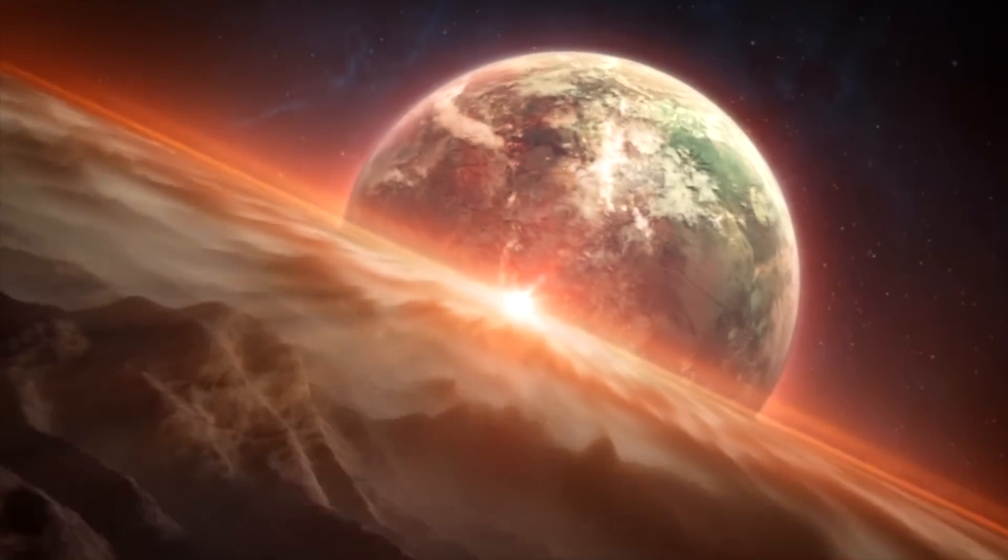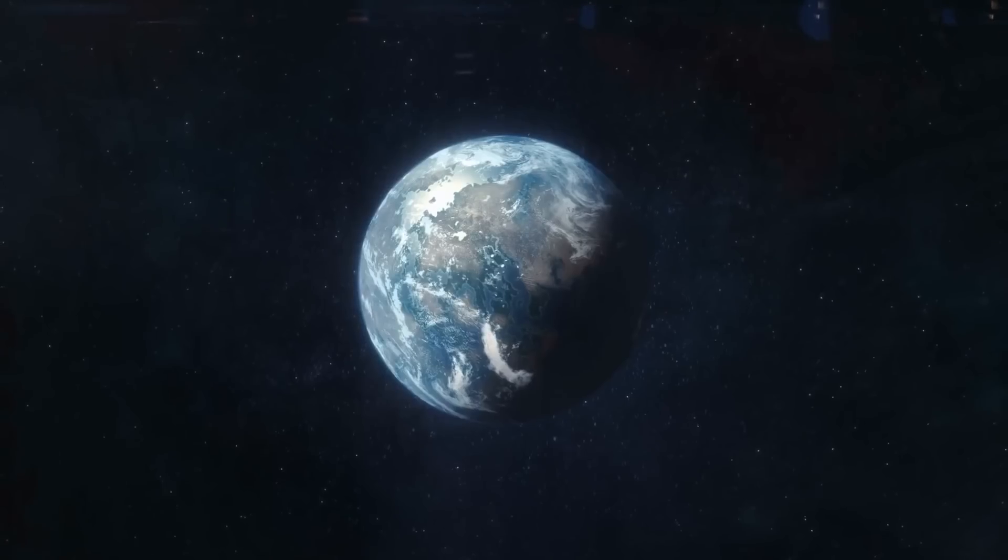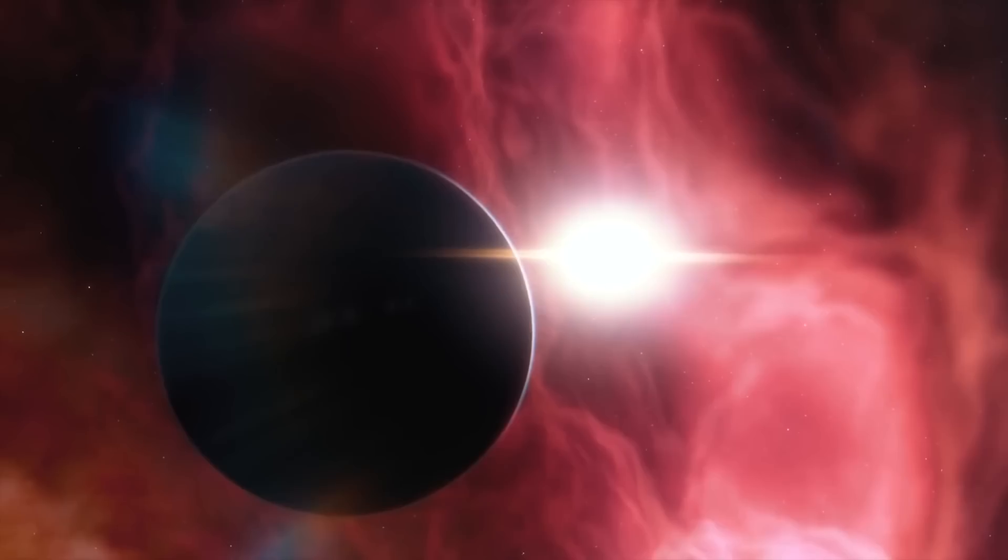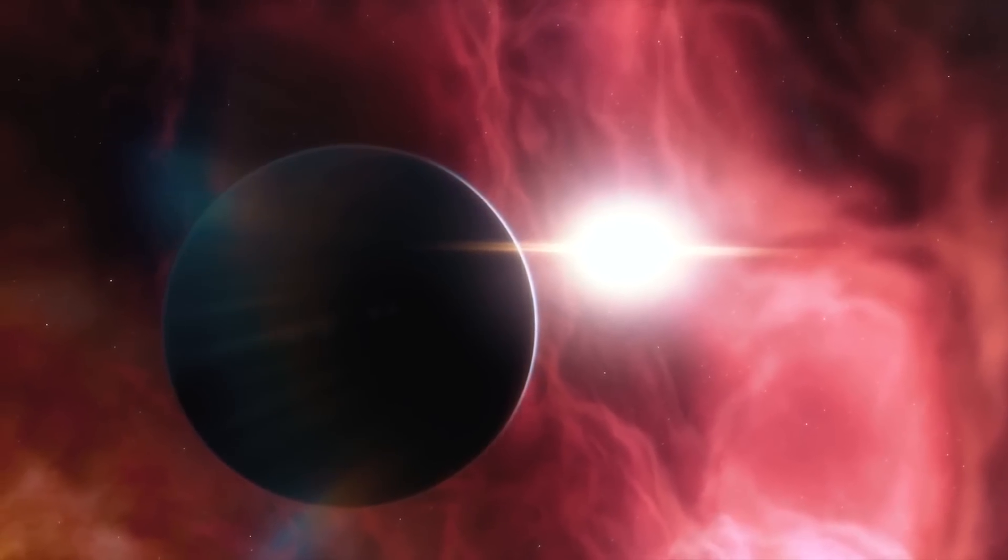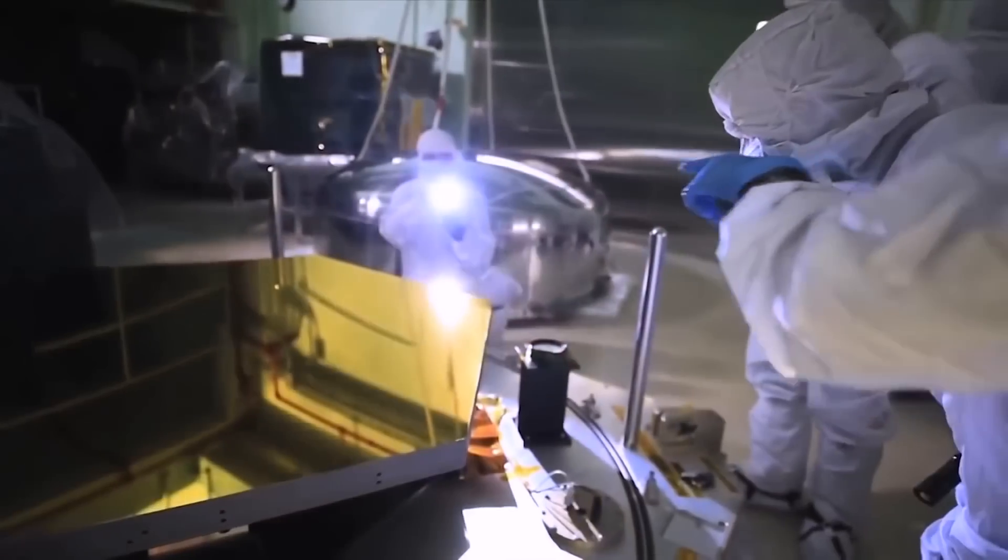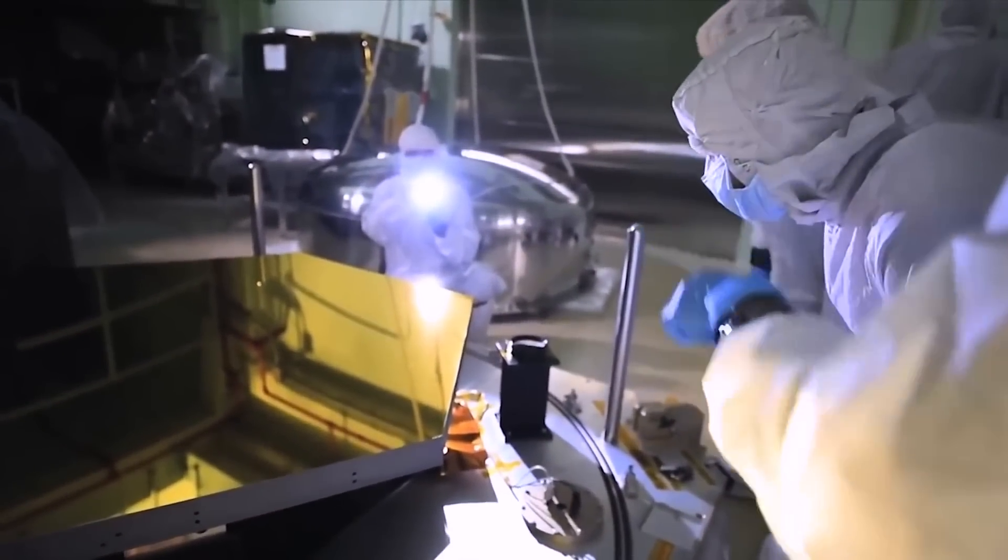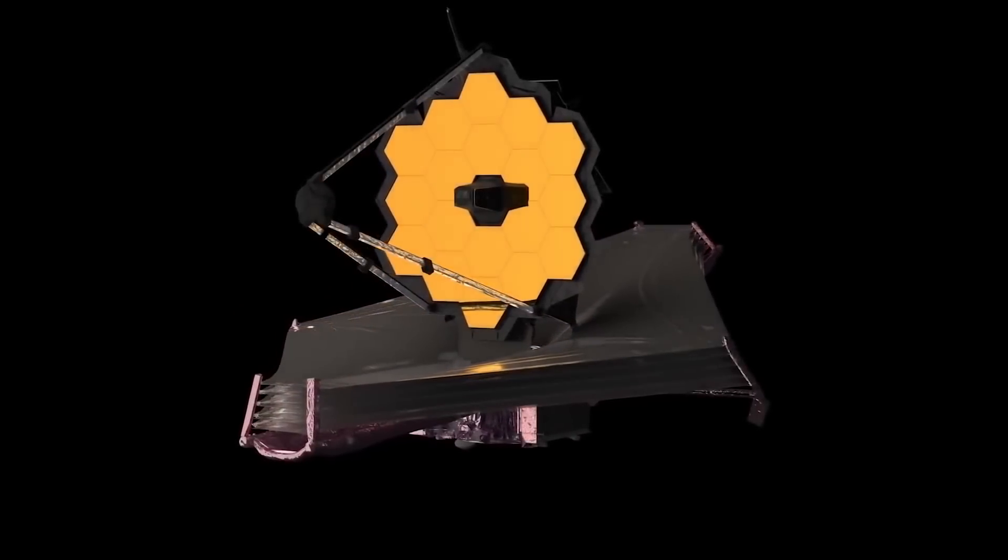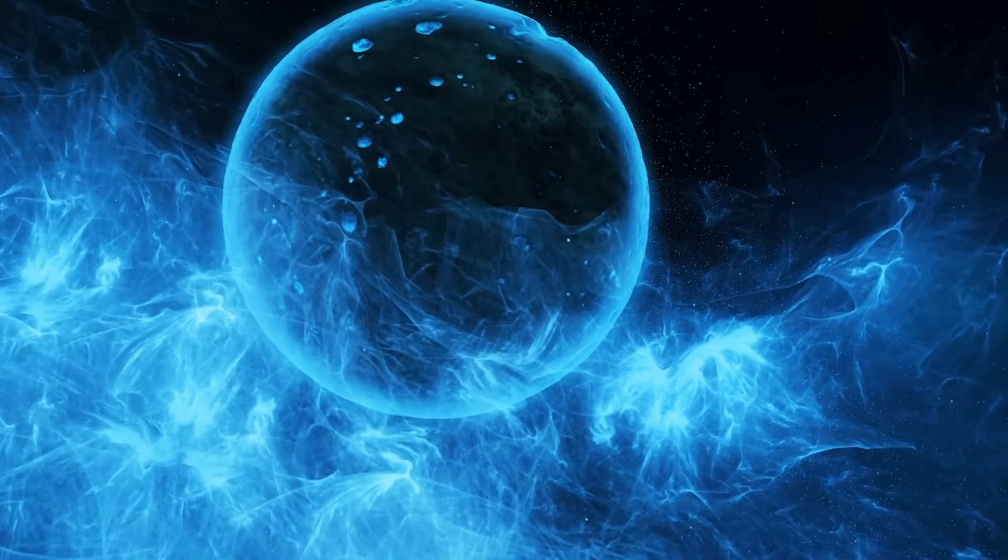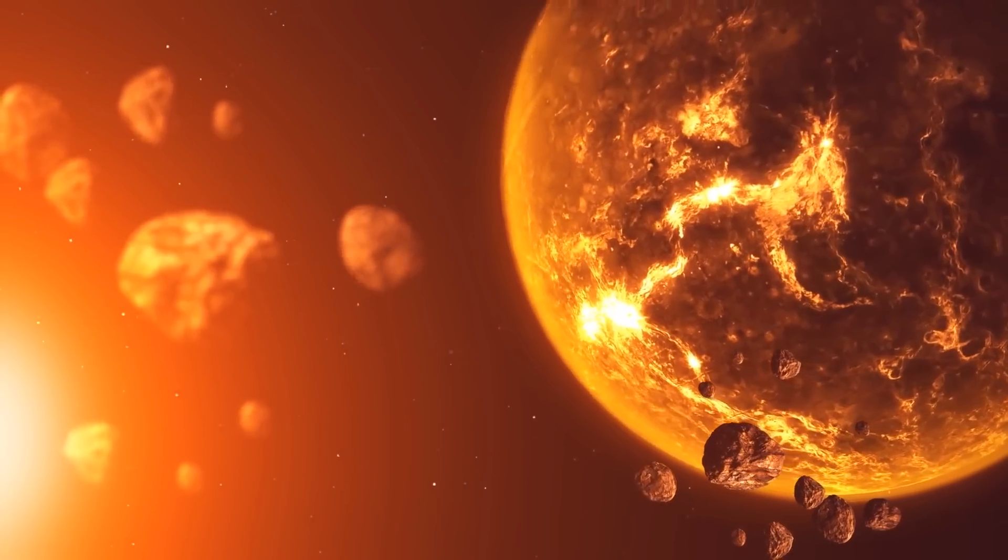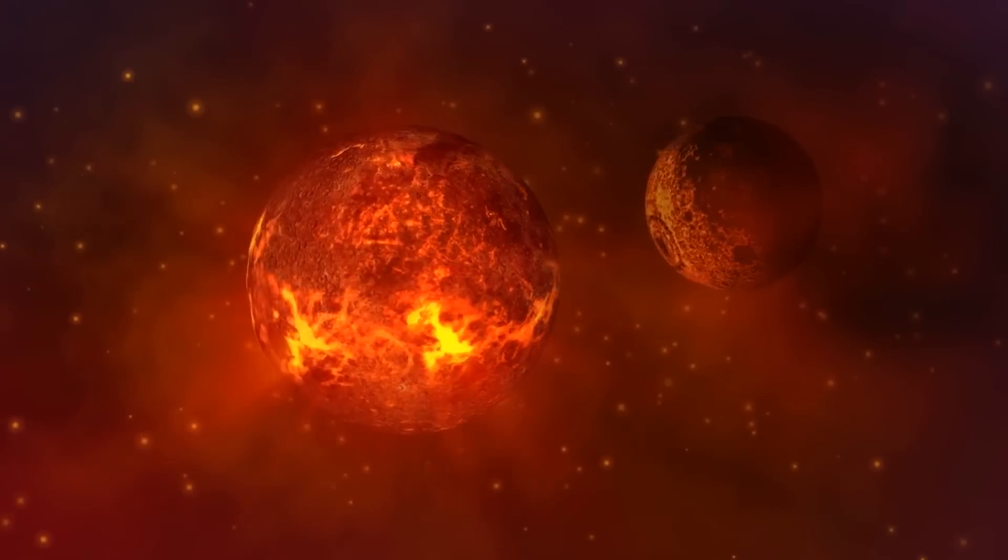Well, we won't be able to image the surface of LHS 3844 b directly with Webb. The lack of an obscuring atmosphere makes it possible to study the surface with spectroscopy. It turns out that different types of rock have different spectra, explains Laura Kreidberg of the Max Planck Institute for Astronomy. You can see with your eyes that granite is lighter in color than basalt. There are similar differences in the infrared light that rocks give off.